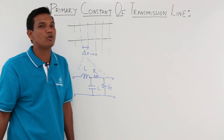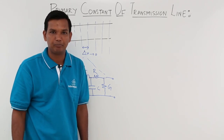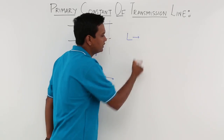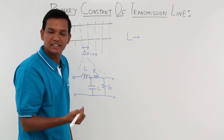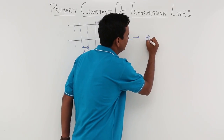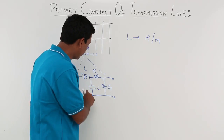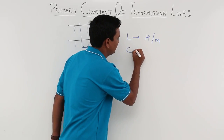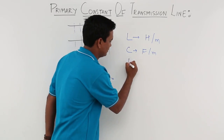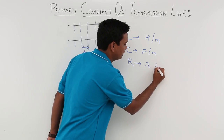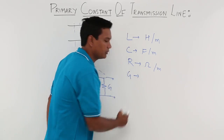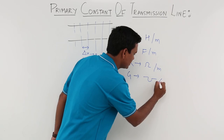These are actually called the primary constants of the transmission line. The unit of L is Henry — but since we are talking about a small length, it would be Henry per meter. The unit of capacitance is Farad, so in this case it would be Farad per meter. The unit of resistance would be Ohm per meter. The unit of G would be Mho, or Ohm inverse, per meter.